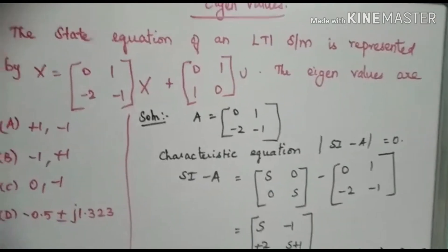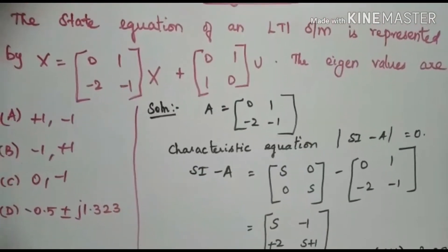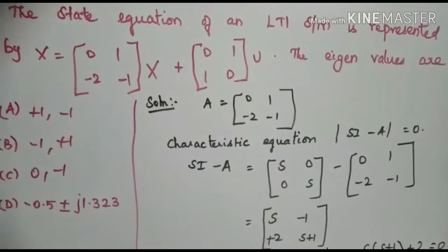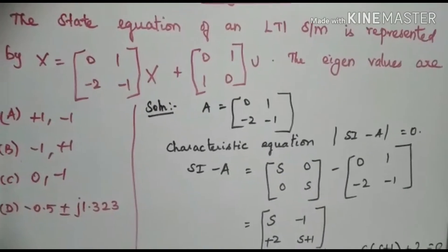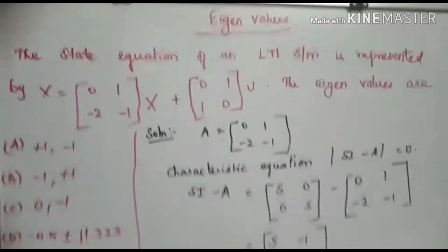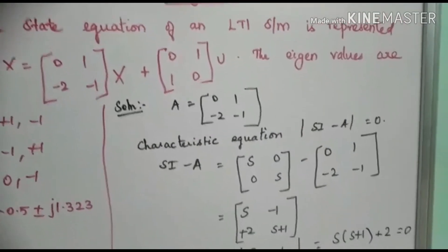Our state equation of an LTI system is represented by x equals [0, 1; -2, -1] times x plus [0, 1; 1, 0]. The eigenvalues are, and the options are given. We need to find the eigenvalues.